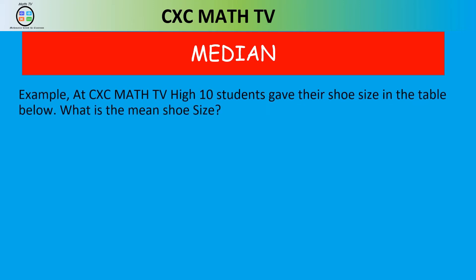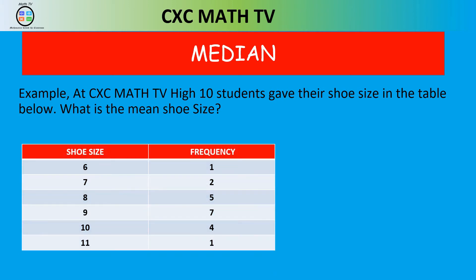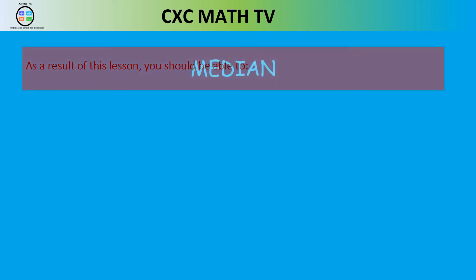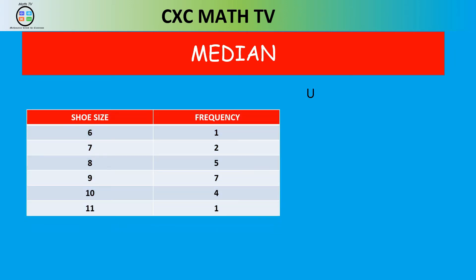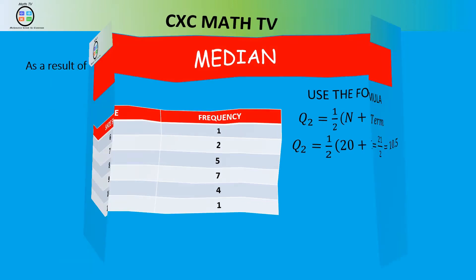Now let's find the median for grouped data — the CXC Math TV shoe size example. Using the formula Q₂ = ½(n+1) term: ½(20+1) = ½(21) = 10.5. So we need to find the 10.5th term.